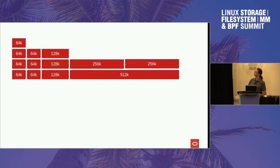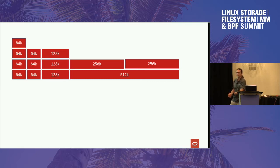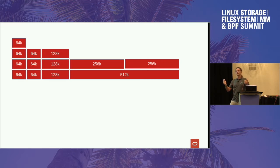Readahead — we love it, it gives us better performance. This illustrates what goes on when you do readahead. If user space is reading one byte at a time, we don't trouble the file system to read one byte at a time. Assuming we're doing page cache, we read 64 kilobytes at a time. This is for pipelining — there's a certain amount of latency between asking the file system to read a page and the page actually becoming up-to-date and being able to give it back to user space.